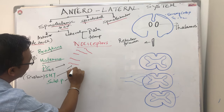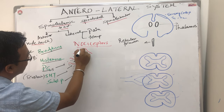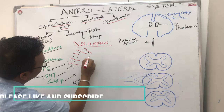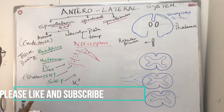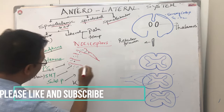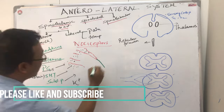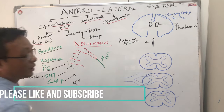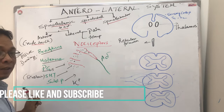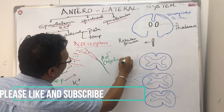When tissue damage occurs, these chemicals activate the free nerve endings. The pain is carried by two types of fibers. One is A-delta fibers, which are large, thin, and myelinated. Remember, these are myelinated fibers.